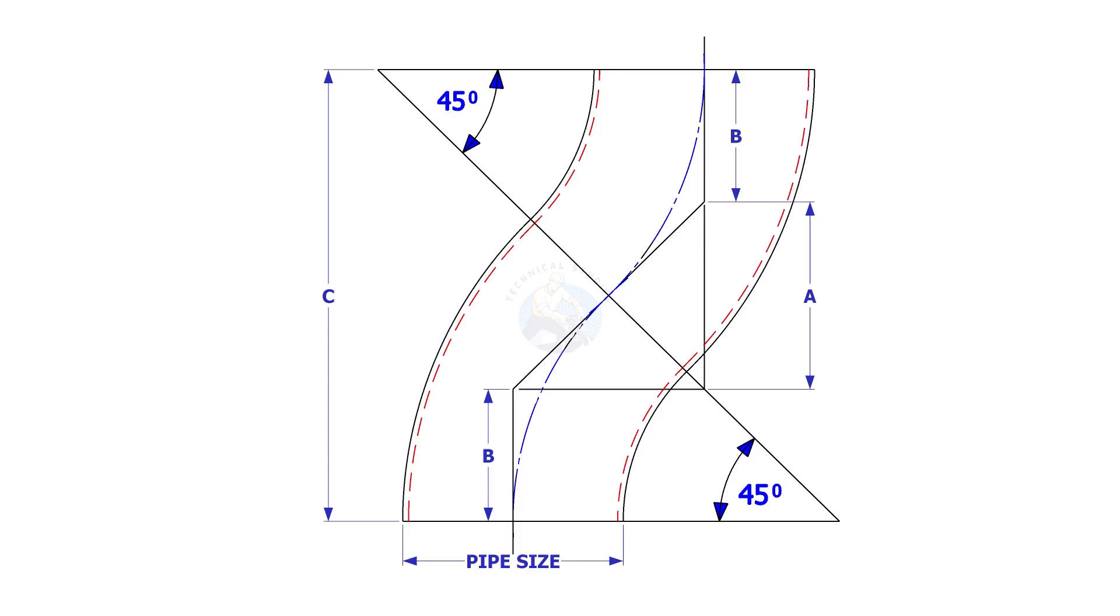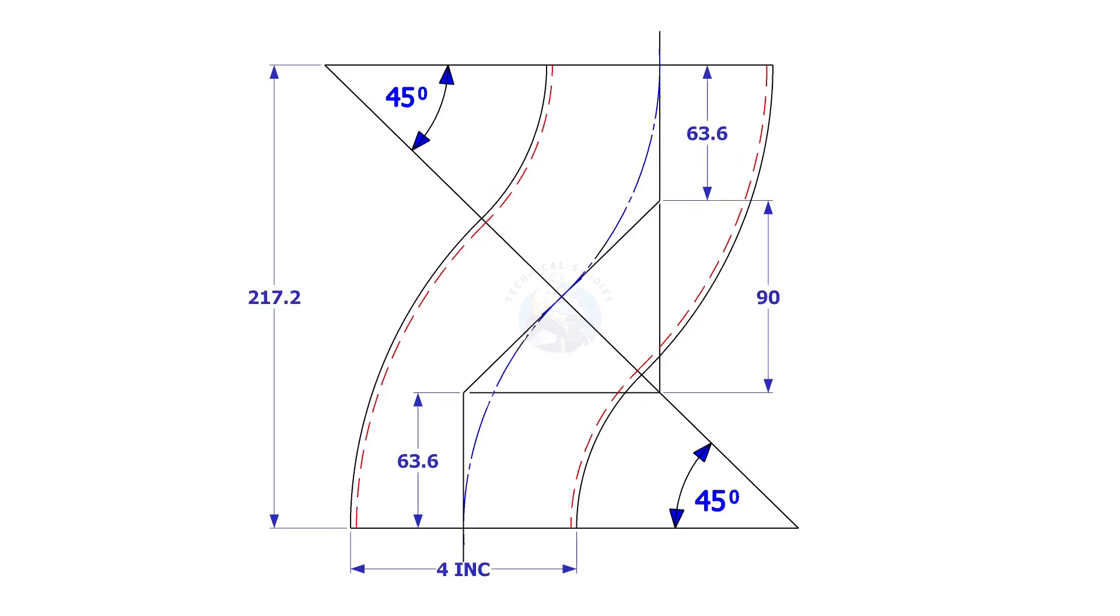This method is not only simple, but you don't have to use a scientific calculator. Remember that this is for long radius elbows only. Assume that the elbow diameter is 4 inches. We have to calculate the elbow center of a 45-degree elbow.